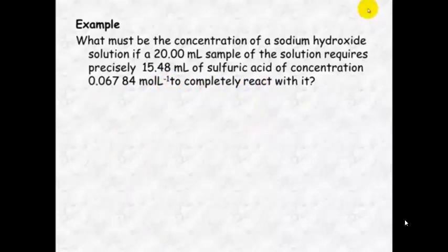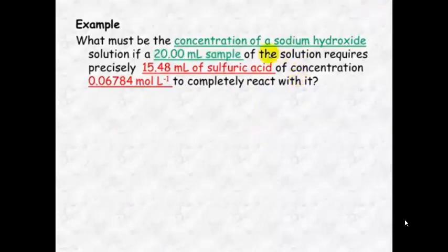So the first thing we need to do is figure out what is reacting in the equation. We will see here that sodium hydroxide is reacting with sulfuric acid. So we can write a chemical reaction based on that.